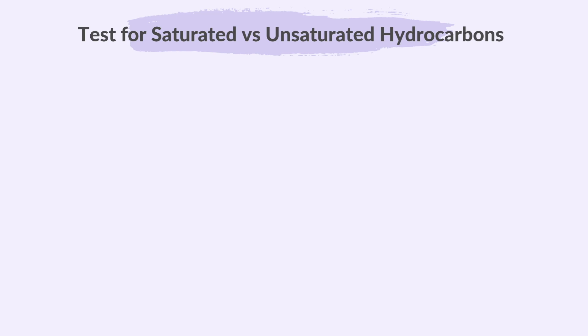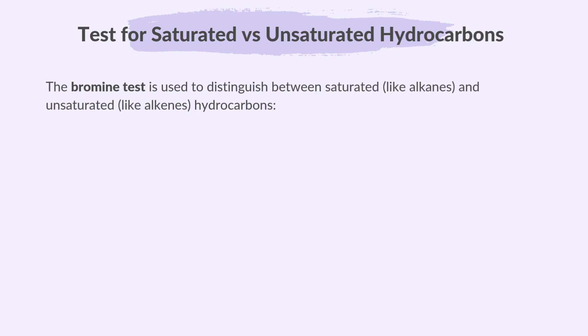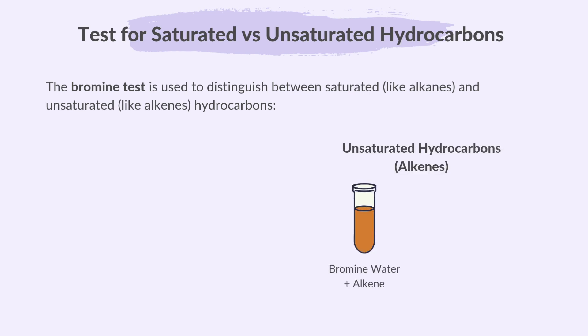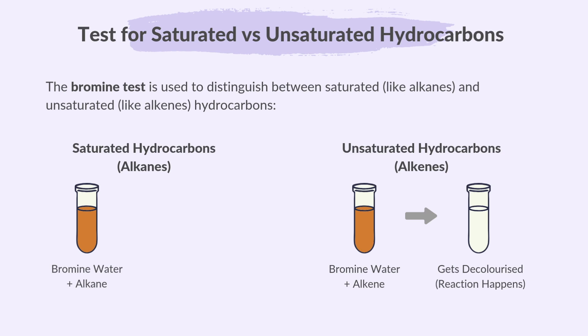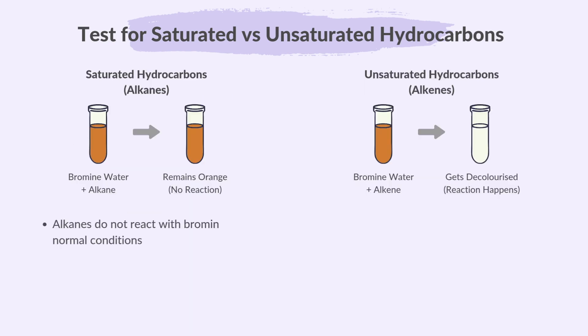Next, the test to distinguish between saturated and unsaturated hydrocarbons. The bromine test is used to distinguish between saturated hydrocarbons, like alkanes, and unsaturated hydrocarbons, like alkenes. Alkenes react with aqueous bromine quickly, decolorizing the bromine water — that is, it turns from orange to colourless — which confirms the presence of a double bond or unsaturation. Alkanes do not react with bromine under normal conditions, so the bromine water remains orange.